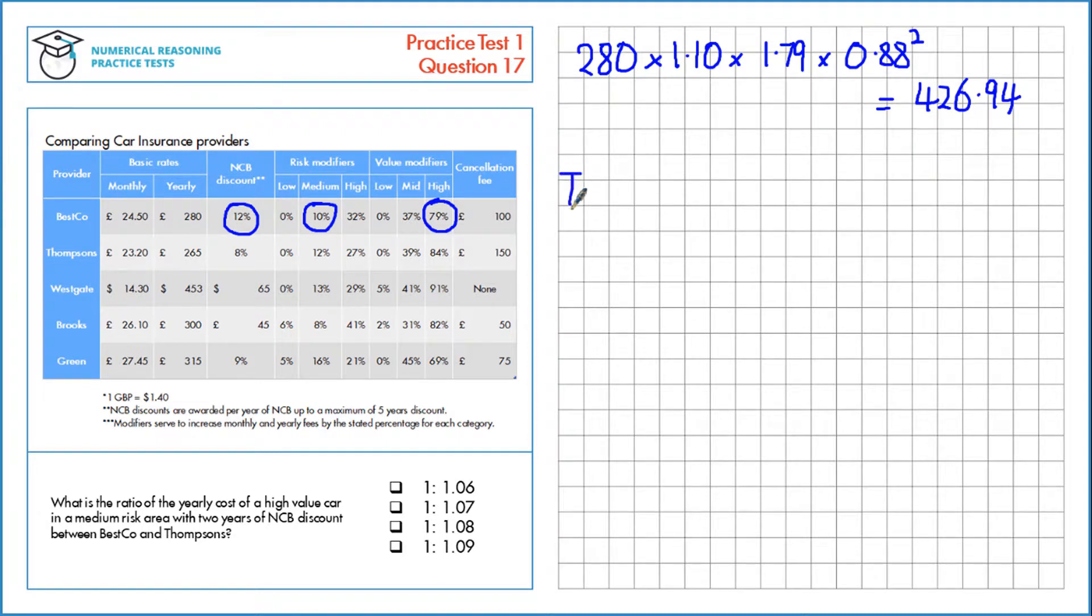Similarly now for Thompsons. We start with £265, and then we've got an 8% no claims bonus discount, 12% risk modifier, and 84% value modifier.